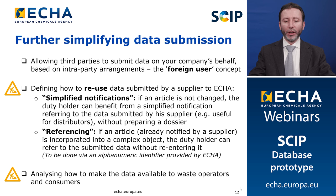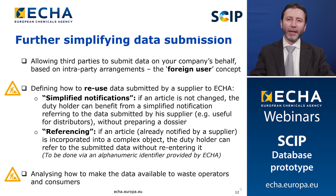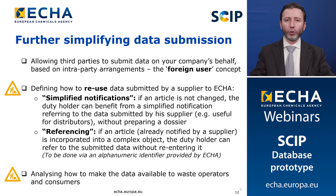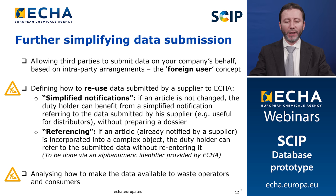We are also working on an approach called referencing, where if you receive an article that is already being notified by one of your suppliers and you incorporate it into a complex object — for instance if you are an assembler — you can just refer to the submitted data without re-entering it. Your supplier provides you with an identifier given during the submission of their notification. All these approaches will be based on an alphanumeric identifier provided by ECHA.